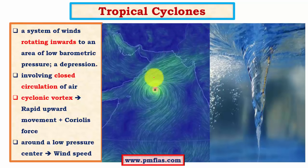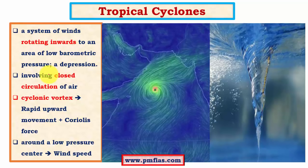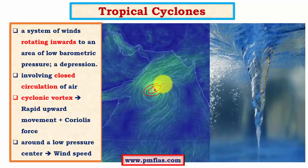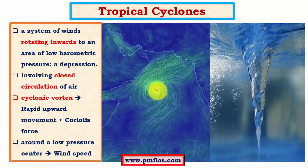Tropical cyclones are a system of winds rotating inwards due to the spiraling effect caused by Coriolis force, associated with closed circulation. Low pressure centers are associated with closed circulation — if we consider isobars, which are lines joining regions of equal pressure, the isobars will be closed circles. This kind of closed isobar pattern is associated with closed circulation of air, which is what we see in the top view of a cyclone.